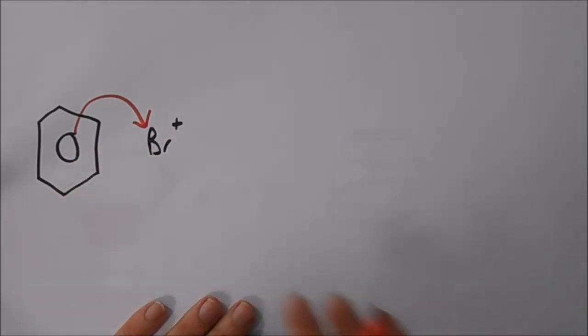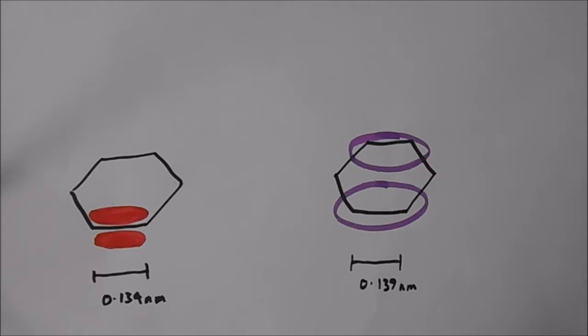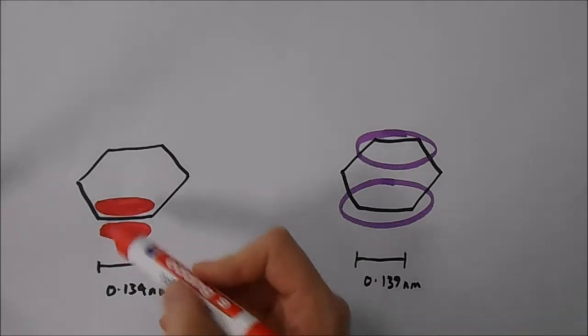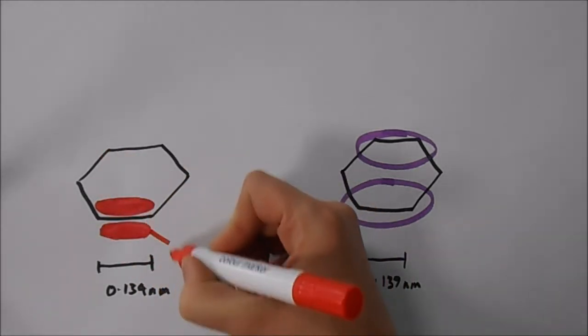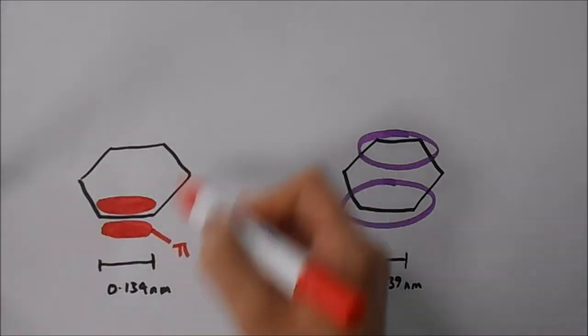And what that leads to is the idea of electron density. We can think of like this: we have in cyclohexene our pi bond above and below the plane of the molecule here.